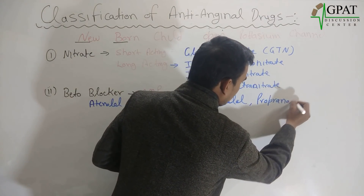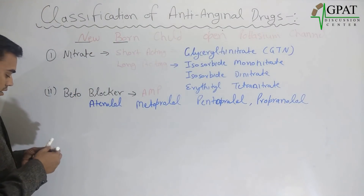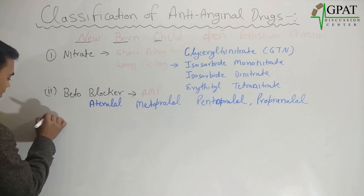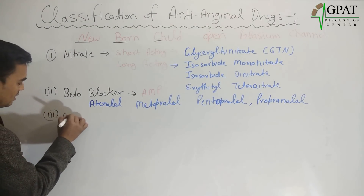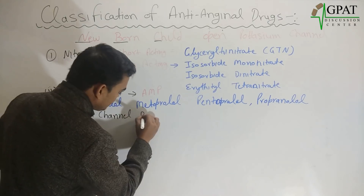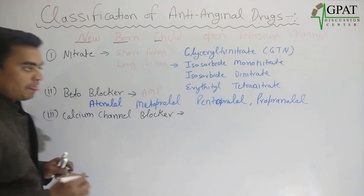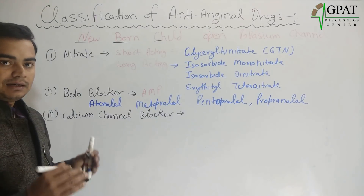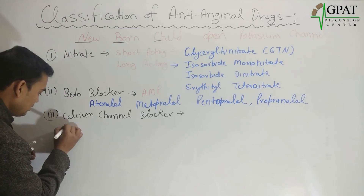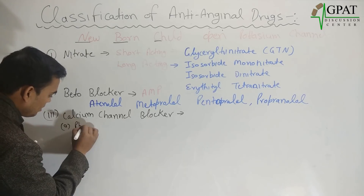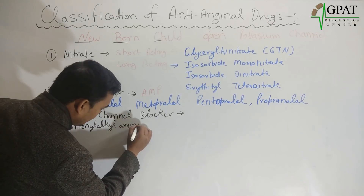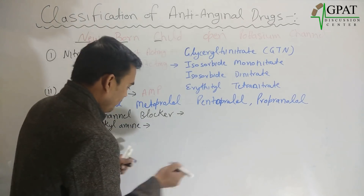The third class, from 'C' for child, is calcium channel blocker. Calcium channel blockers are classified into three categories. The first category is phenylalkylamine, and the example of phenylalkylamine is verapamil.